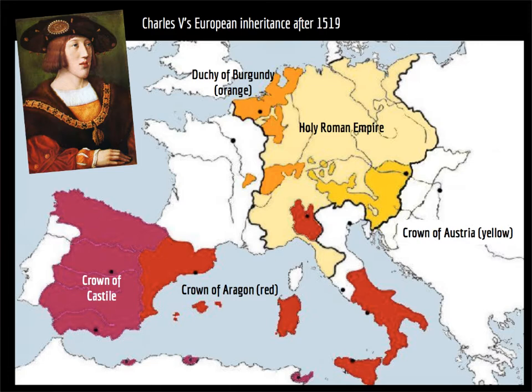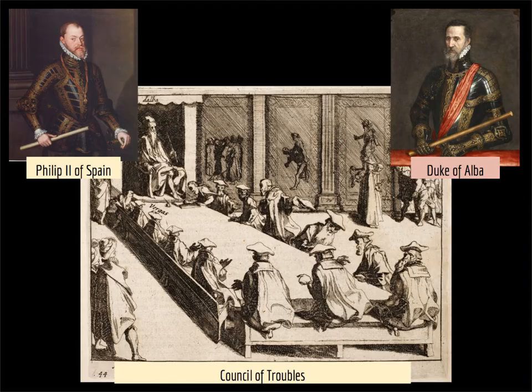In 1516, the Netherlands, a group of Dutch provinces in Western Europe, fell into Spanish hands. Charles V had inherited the Netherlands as part of his Burgundian patrimony, and when he became the King of Spain, the Netherlands joined his Spanish Empire. When Charles then became the Holy Roman Emperor in 1519, the Netherlands became part of the largest empire in the world at that time.